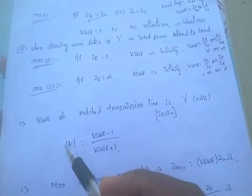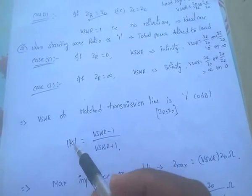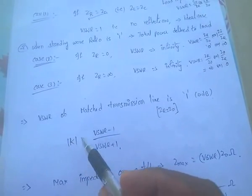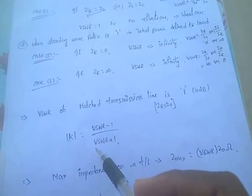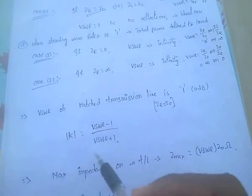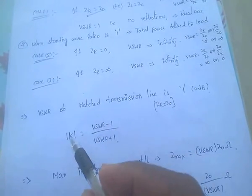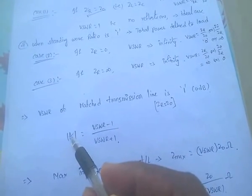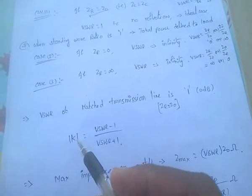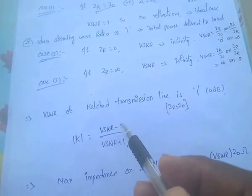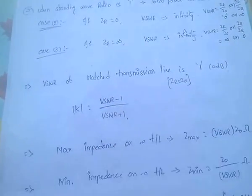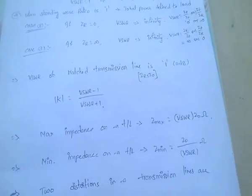The reflection coefficient mod K equals VSWR minus 1 by VSWR plus 1. Very, very, very important: the reflection coefficient K equals (VSWR − 1) / (VSWR + 1).